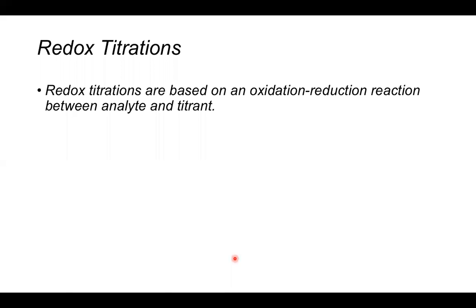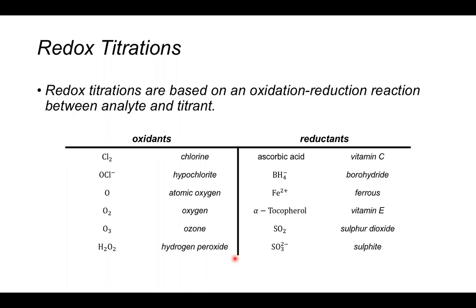That was a brief overview of acid-base titrations, covering only strong acid-strong base cases, as weak acid-base titrations are not as relevant to our understanding of redox titrations. So again: redox titrations are based on an oxidation-reduction reaction between the analyte and the titrant. Instead of an acid-base reaction, we now have an oxidation-reduction reaction, using those oxidants and reductants discussed at the start.